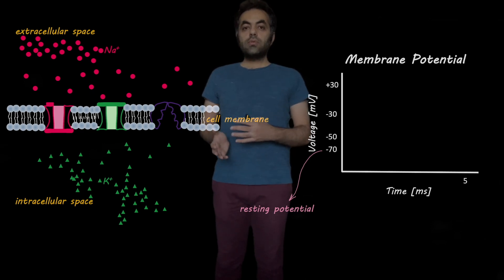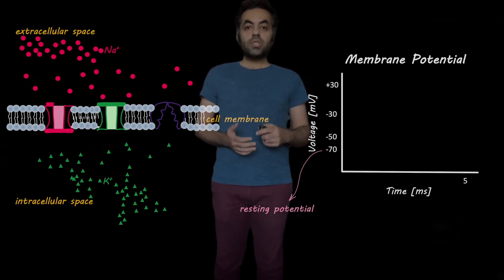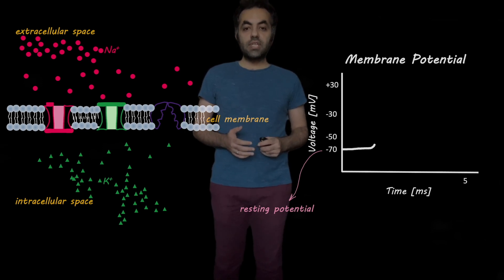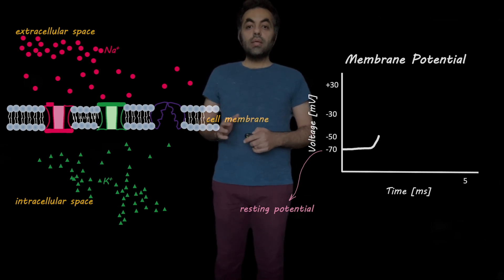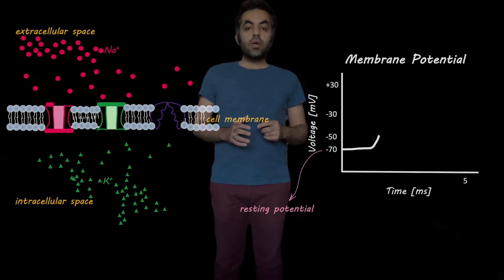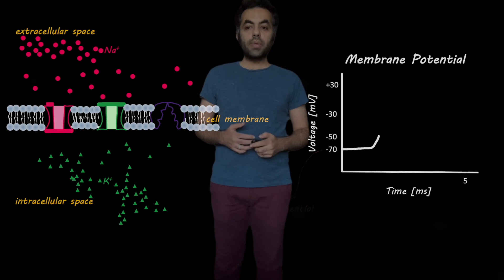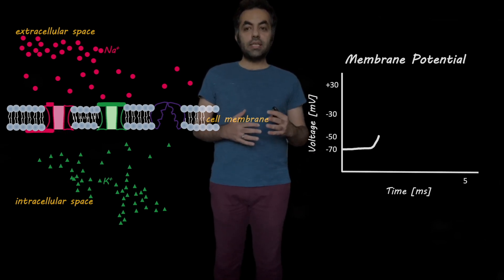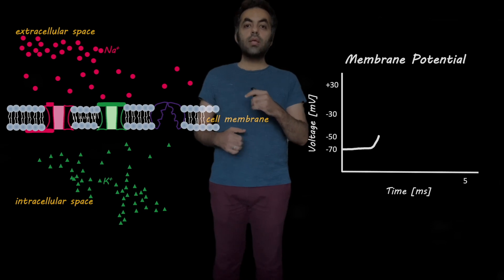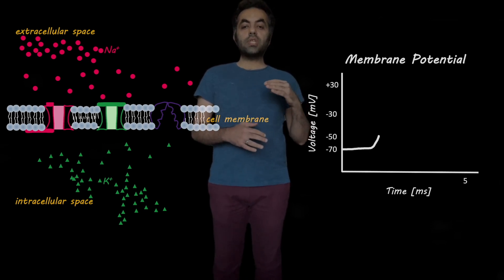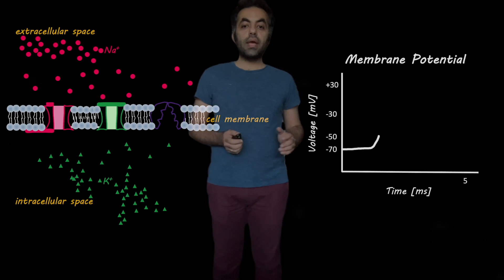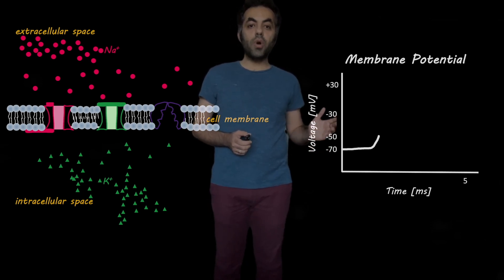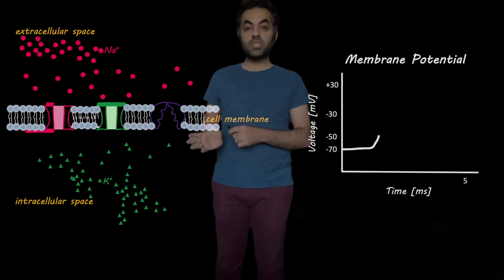Now, if due to some stimulations the membrane potential rises from minus 70 to something around minus 55 or minus 50, the sodium channels, which are voltage-gated channels, open. What does it mean that it is a voltage-gated channel? It means that if the voltage across a sodium channel exceeds a threshold — a potential threshold — then the sodium channels open. In this case, the membrane potential rises from minus 70 to minus 50, and therefore the sodium channels open.